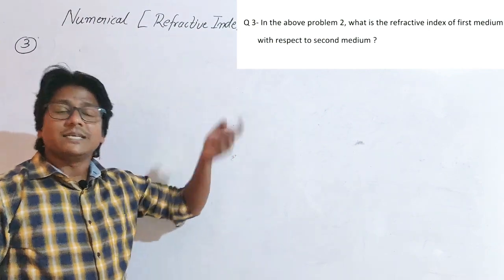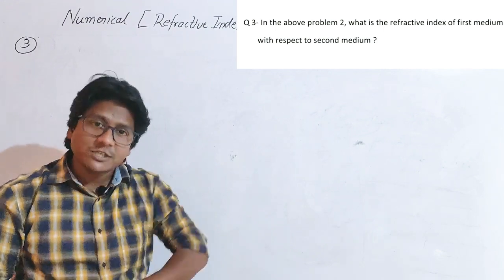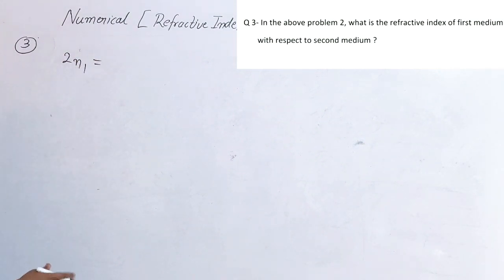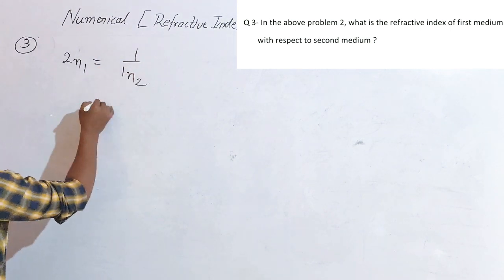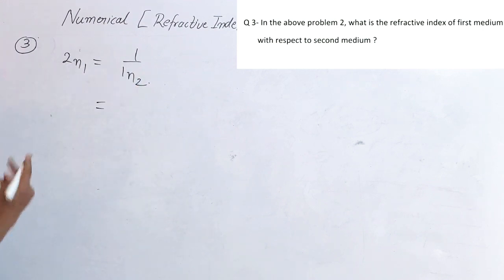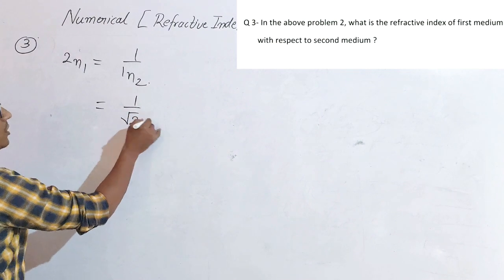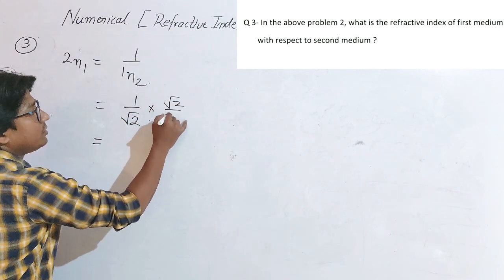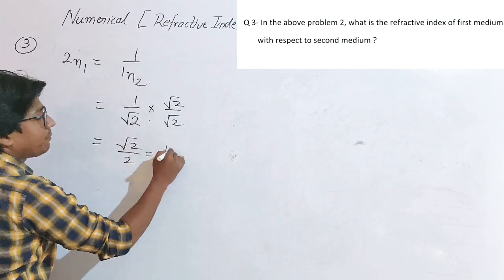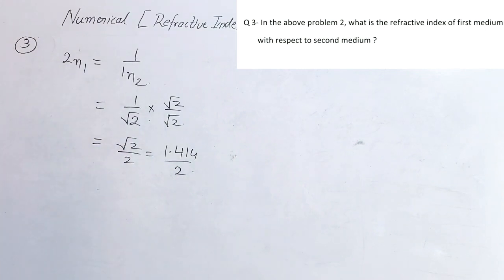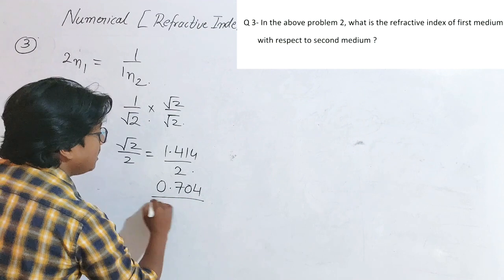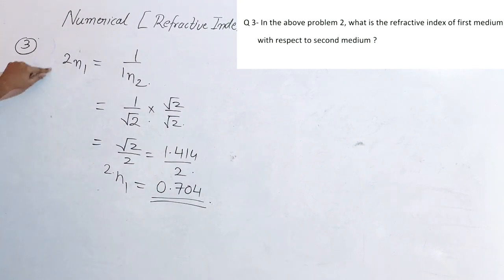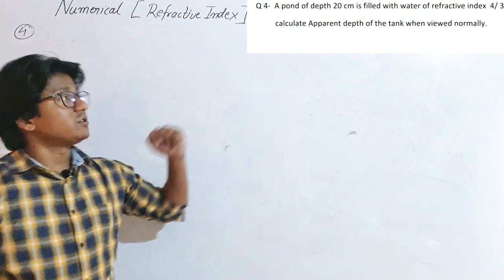The third question is based on the same problem and asks for the refractive index of first medium with respect to second medium, that is 2n1. We know that 2n1 is the reciprocal of 1n2. The value of 1n2 is √2, so 2n1 = 1/√2. Rationalizing: 1/√2 × √2/√2 = √2/2 = 1.414/2 = 0.707. So the refractive index of first medium with respect to second is 0.707.